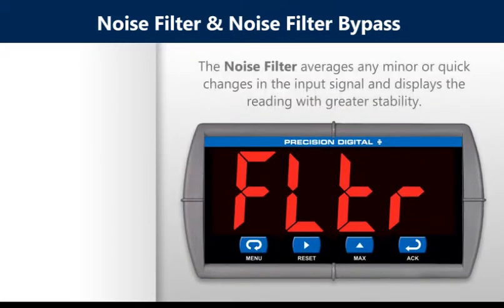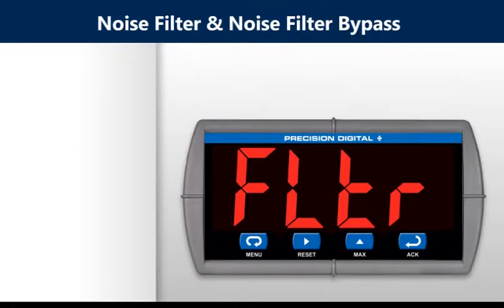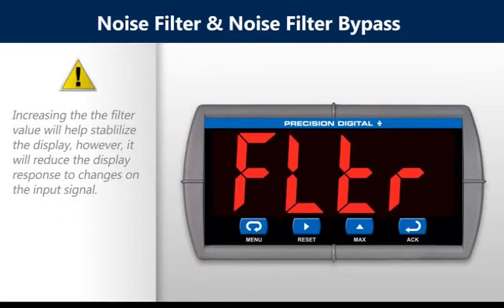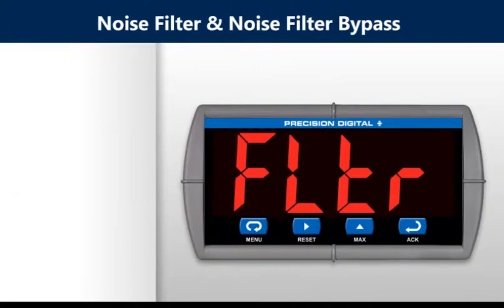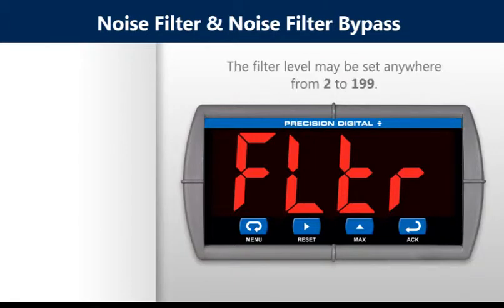The field selectable noise filter averages any minor or quick changes in the input signal and displays the reading with greater stability. Increasing the filter value will help stabilize the display. However, this will reduce the display response to changes on the input signal. The filter may be set anywhere from 2 to 199.